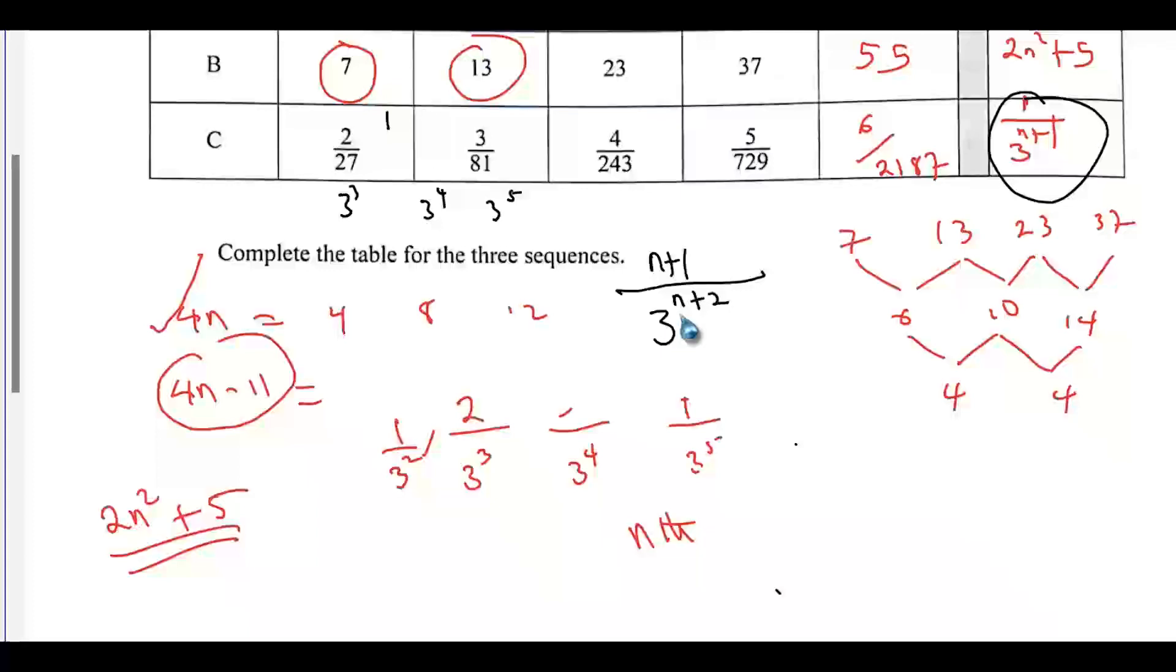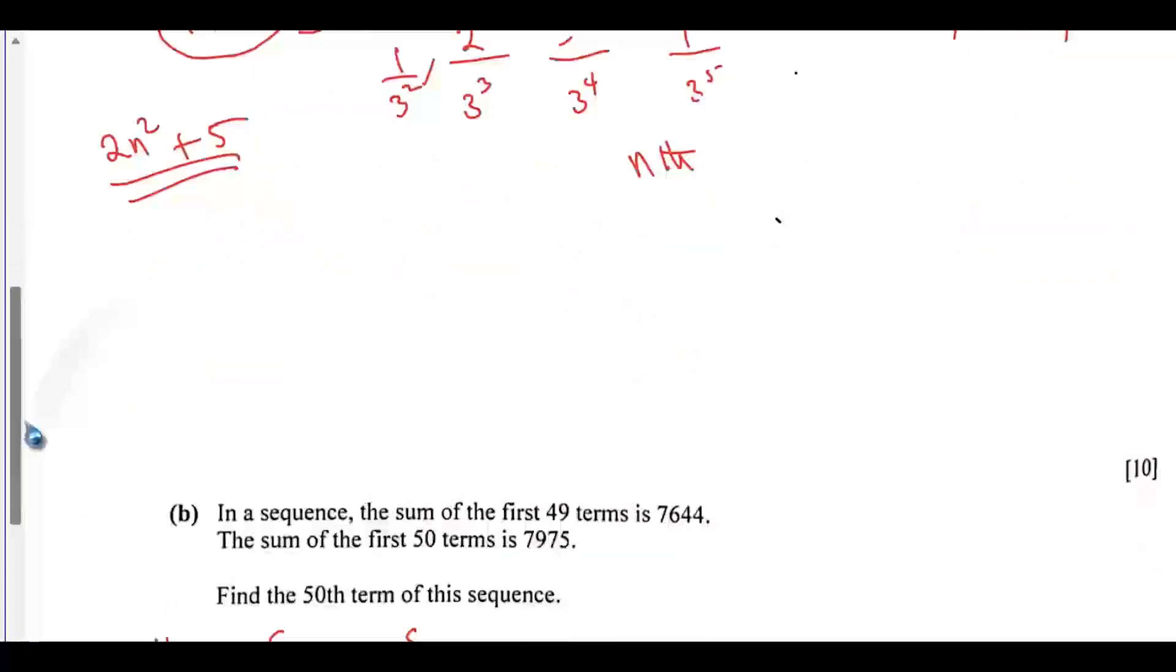Let's test this. For the denominator, you have 3 to the power of 1 plus 2, you will get 3³ which is 27. 2 plus 2, that is 3 to the power of 4, you get 81 and so on. The nth term will not be this. It will be n plus 1 over 3 to the power of n plus 2. That will give you the correct sequence there. Let's go to the next one.